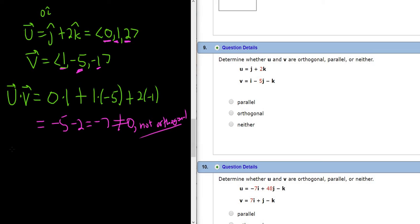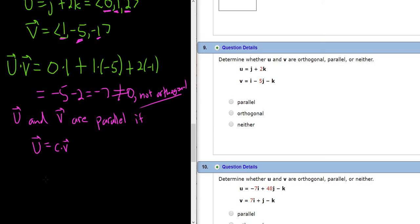Okay, so parallel is the interesting one. So u and v are parallel. Let me go ahead and write this down. So u and v are parallel if u is equal to a scalar times v. So in other words, if you can take one of them and multiply it by a number to get the other.